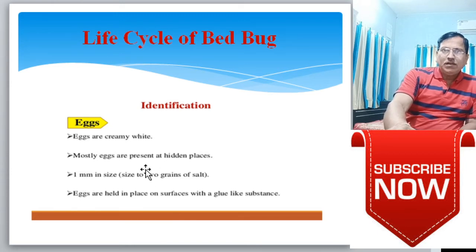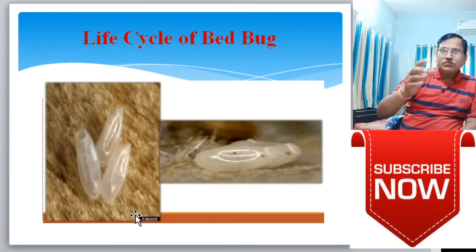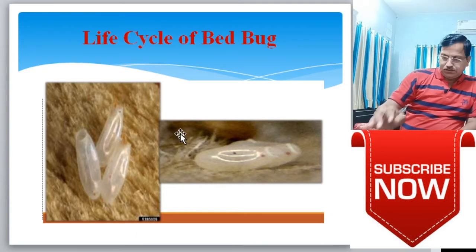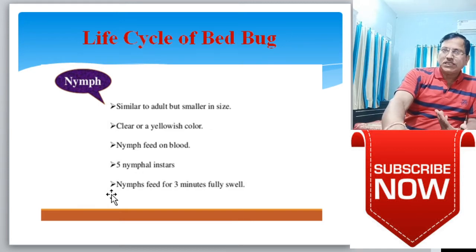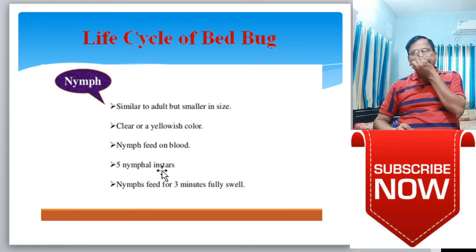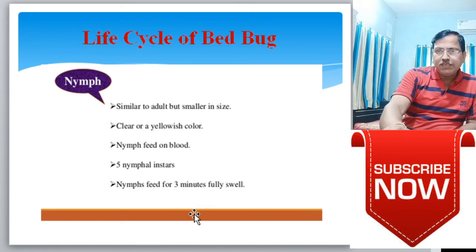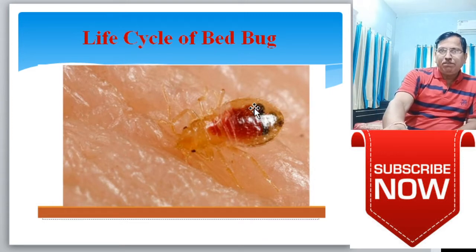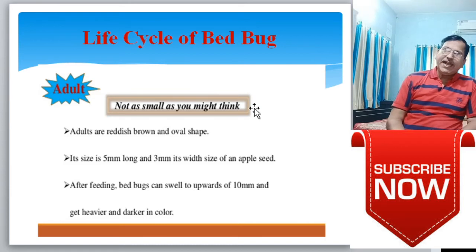Eggs are creamy white and mostly found in hidden places; they are 1 mm in size, about the size of two grains of salt. Eggs are held in place on surfaces with a glue-like substance. The nymphal stage has three to five instars - similar to adults but smaller in size, clear or yellowish in color. Nymphs feed on blood; there are five nymphal instars in the life cycle. Nymphs feed for about three minutes until fully swollen.